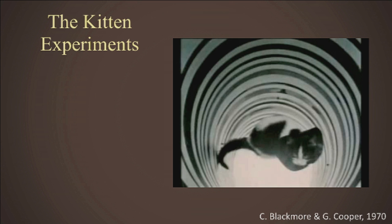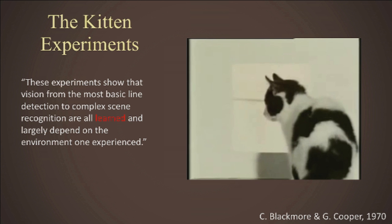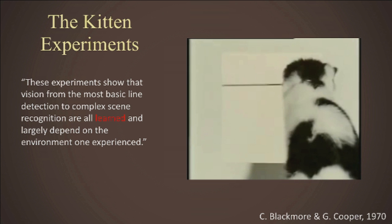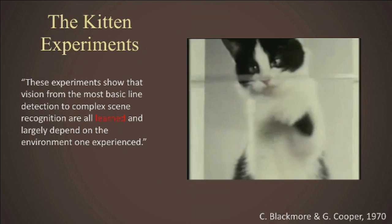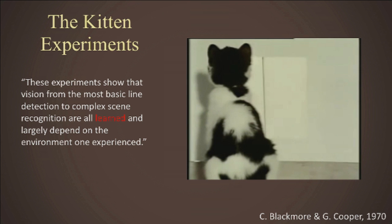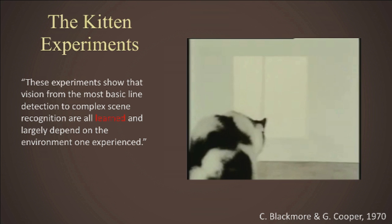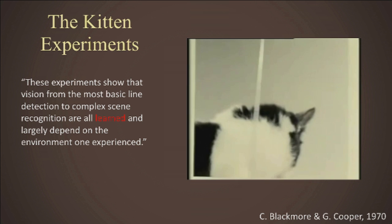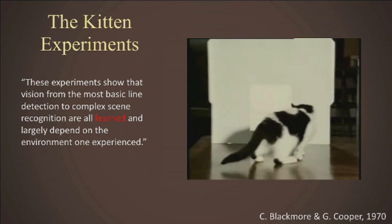A video shows that after a few weeks, the kitten reacts normally to horizontal lines she's familiar with — she's intrigued by a moving horizontal line and tries to grab it, typical kitten behavior. But when shown vertical lines, she doesn't even see them. Her visual system, because it never learned vertical structure, did not develop any receptive fields tuned to vertical lines. It didn't develop anything to see vertical lines.